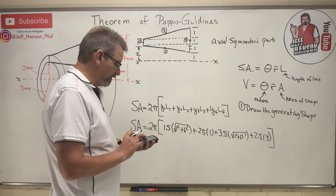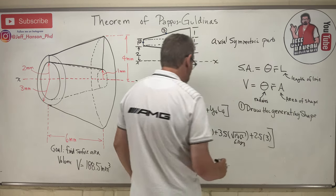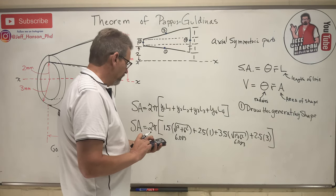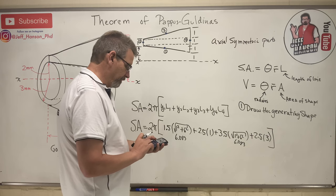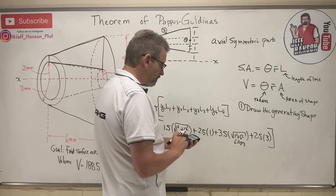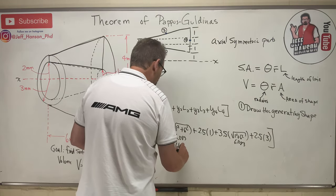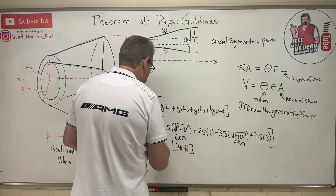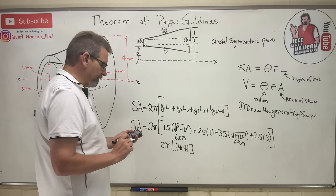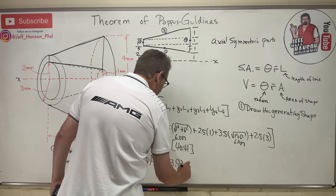√37 ≈ 6.083. Computing: 1.5 × 6.083 + 2.5 × 1 + 3.5 × 6.083 + 2.5 × 3 = 40.41. Then SA = 2π × 40.41 = 253.93 mm². The surface area is equal to 253.93 square millimeters.